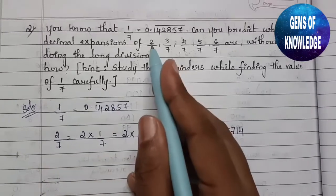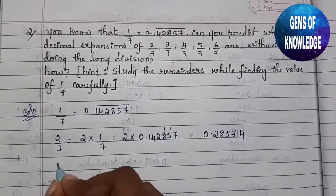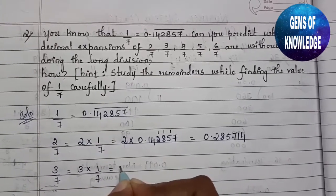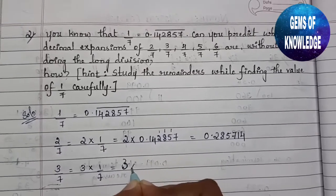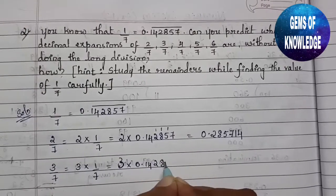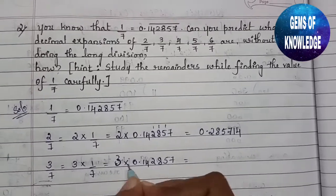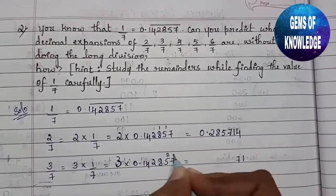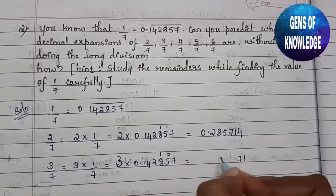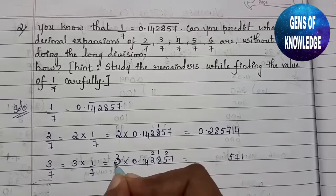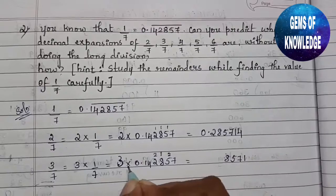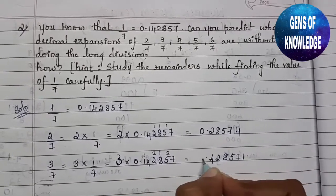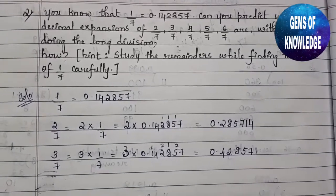Similarly, 3/7 = 3 × (1/7) = 3 × 0.142857. Multiplying: 3×7=21, write 1 carry 2; 3×5=15+2=17, write 7 carry 1; 3×8=24+1=25, write 5 carry 2; 3×2=6+2=8; 3×4=12, write 2 carry 1; 3×1=3+1=4; point stays. So 3/7 = 0.428571.